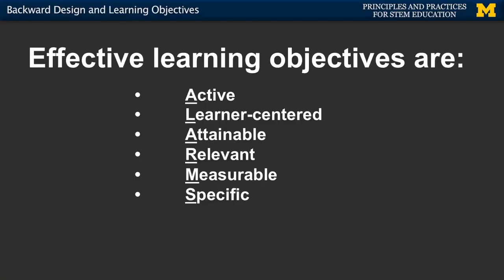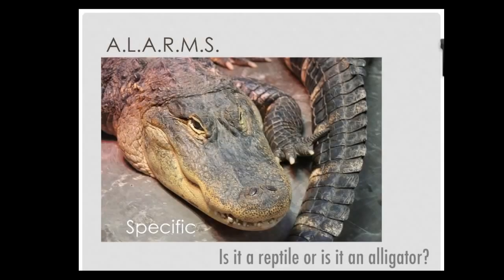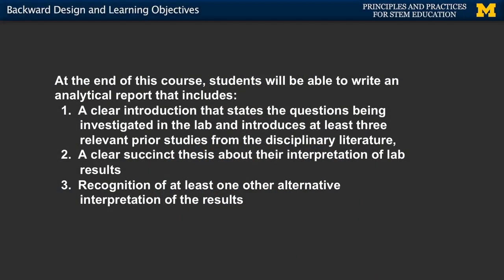Then S is for specific. Useful learning objectives are not vague. Every instructor, regardless of discipline, wants students to have improved analytical skills or better writing at the end of the course. But goals like 'improved' or 'better' are really too vague to be useful as learning objectives. A more useful objective specifies how the student's writing skills will be improved. For example, an instructor might include in their syllabus a specific objective about a lab report — that the student is able to create a clear, succinct thesis about their interpretation of lab results, and that they are able to describe alternative interpretations of those results. This gets very specifically into what's going to be improved in the student's writing.